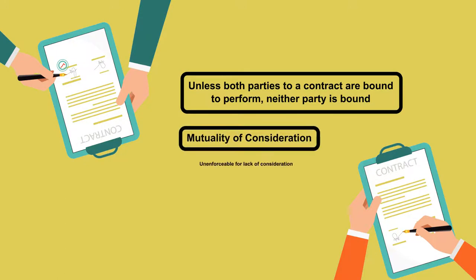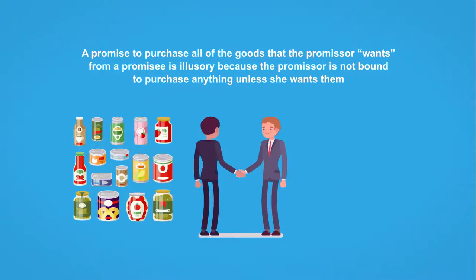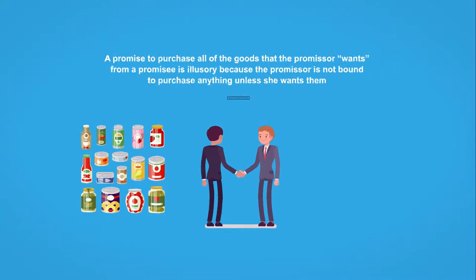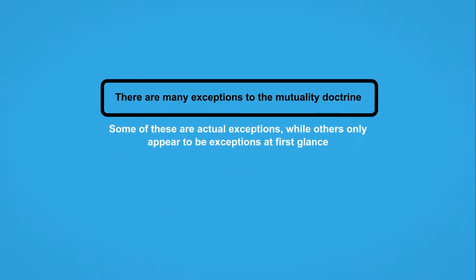That is, there must be mutuality of consideration, or the contract is unenforceable for lack of consideration. A contract is illusory and thus unenforceable when only a single party is bound by it. For example, a promise to purchase all of the goods that the promiser wants from a promisee is illusory because the promiser is not bound to purchase anything unless she wants them. There are many exceptions to the mutuality doctrine — some are actual exceptions while others only appear to be exceptions at first glance.